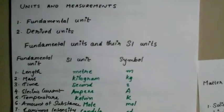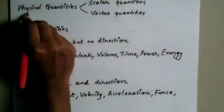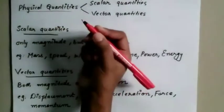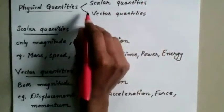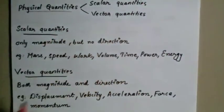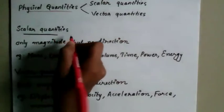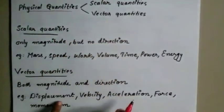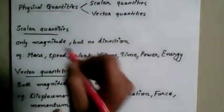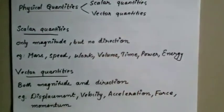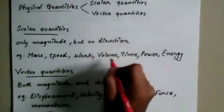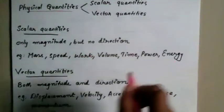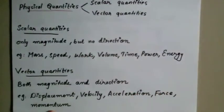Physical quantities are divided into scalar quantities and vector quantities. Scalar quantities have only magnitude — no direction. Examples of scalar quantities include mass, speed, work, volume, time, power, and energy. For example, the speed is 150 km per hour — 150 is the magnitude, and there is no direction.